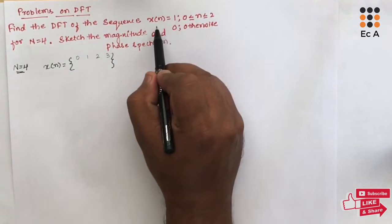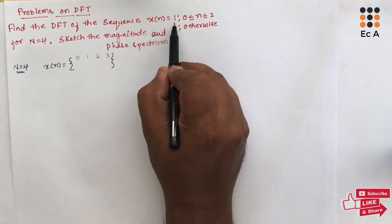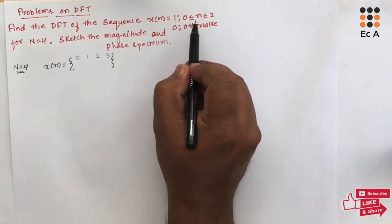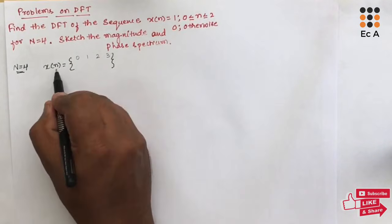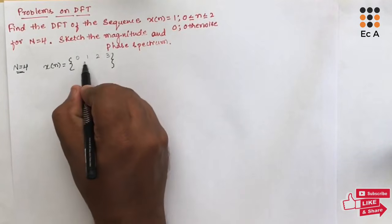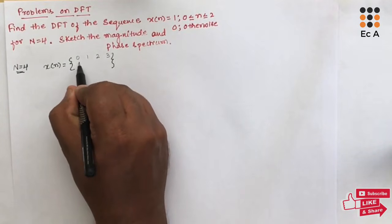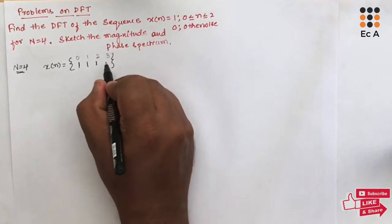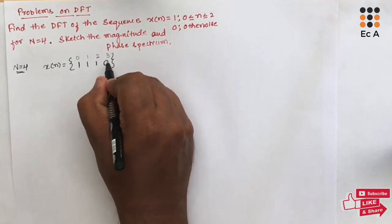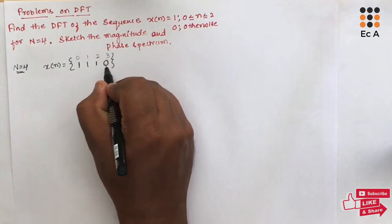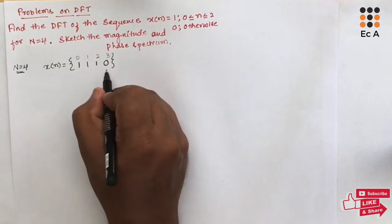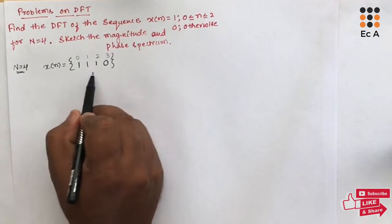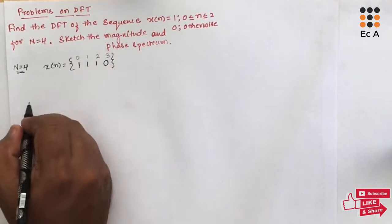In the given problem, x[n] = 1 for n = 0, 1, 2, and x[n] = 0 for other values. So for n = 3, we write x[n] = 0. This is the sequence for which we need to find the DFT.